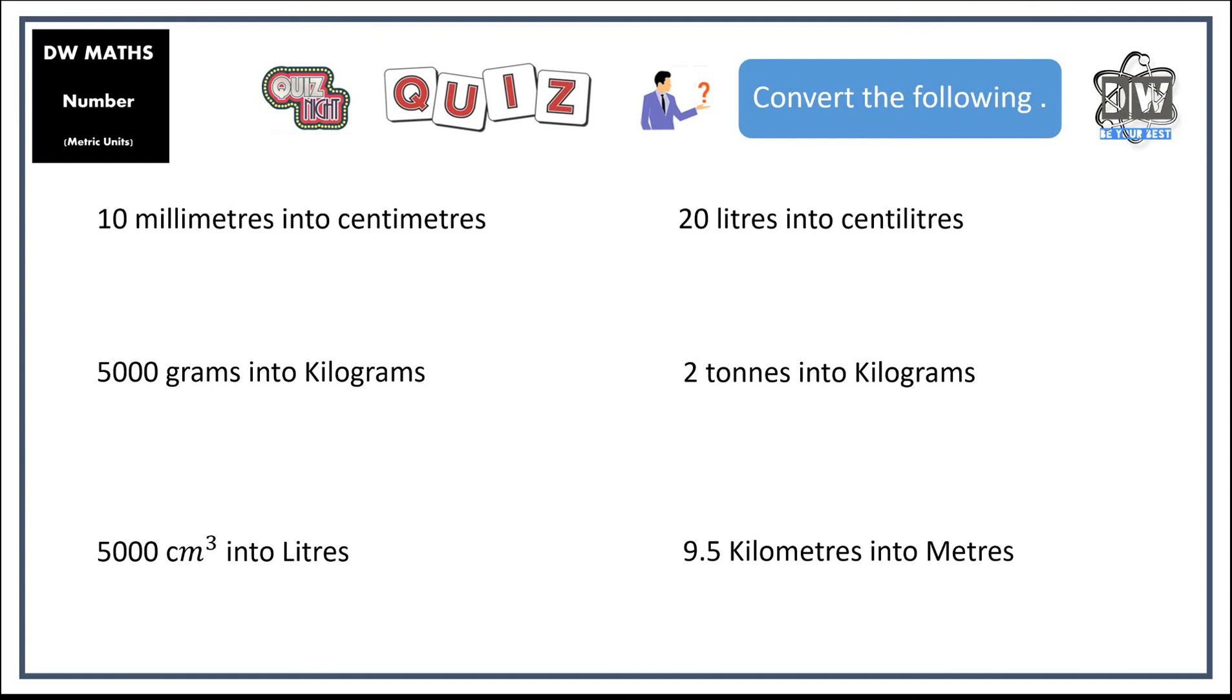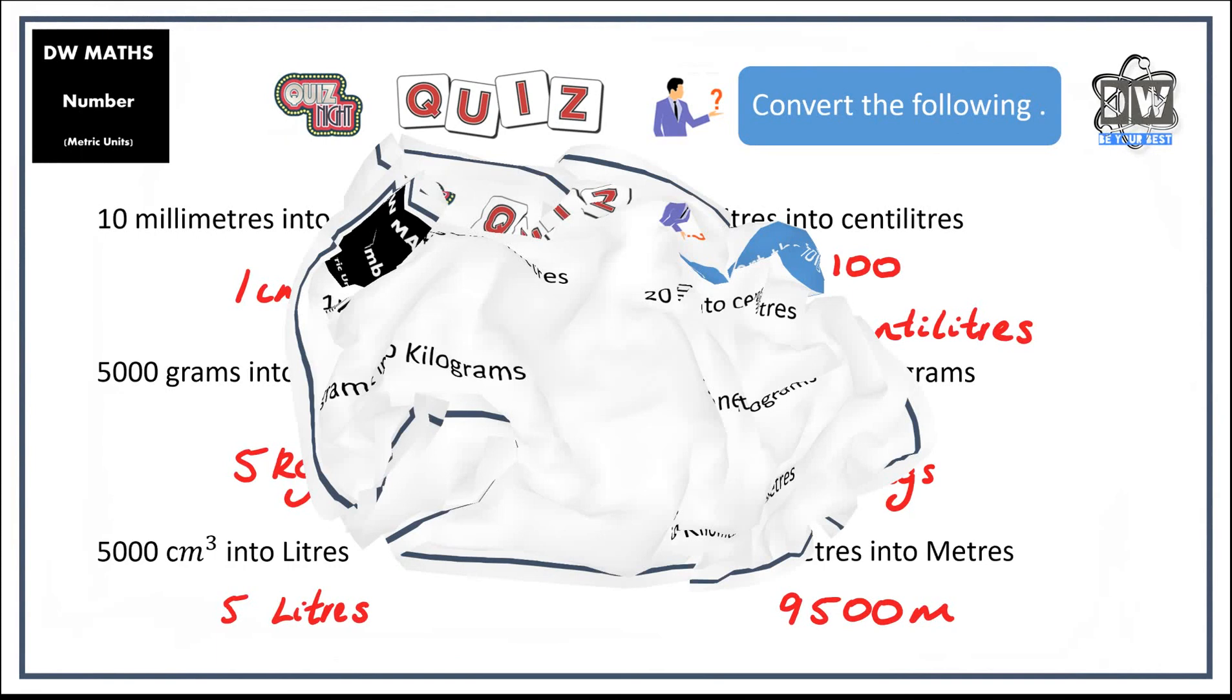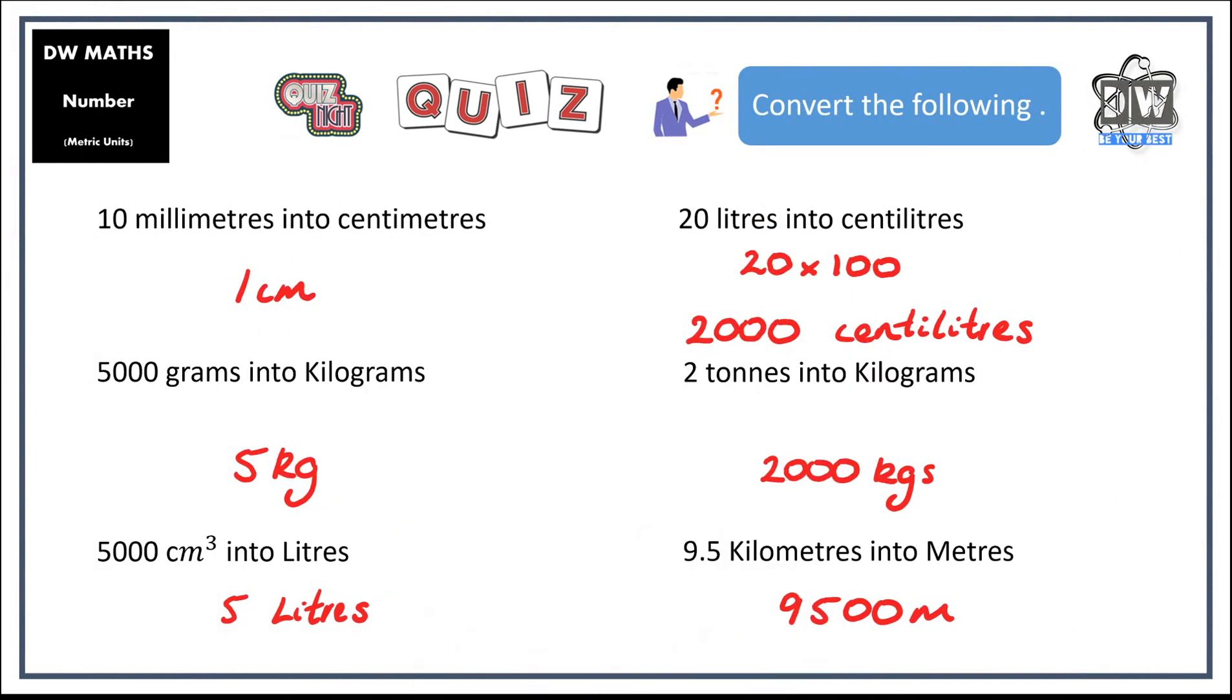So let's go over the answers now. We had 10 millimeters equals a centimeter. 5,000 grams equals 5 kgs or kilograms. We've got our 5 liters here. 5,000 centimeters cubed would give us 5 liters. 20 liters into centimeters. So we're timesing it by 100, which gives us 2,000 centimeters.